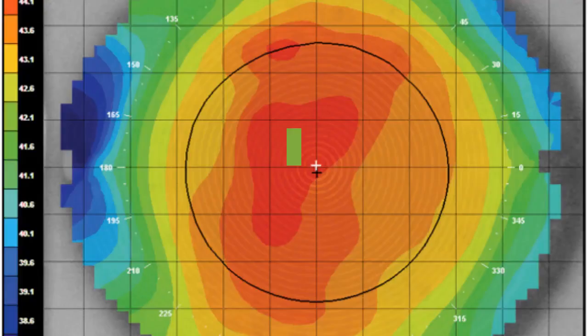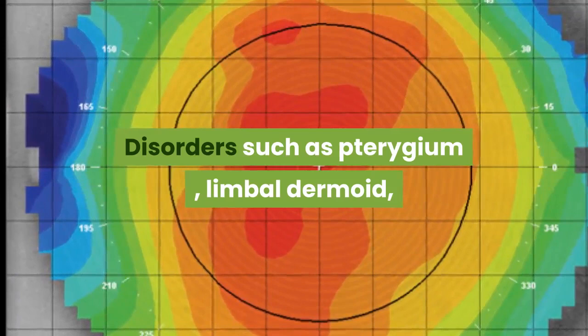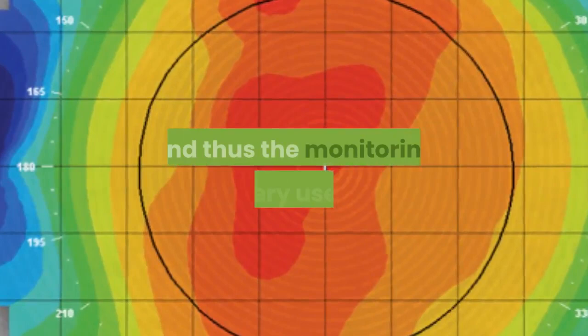Affective corneal and ocular surface disorders such as pterygium, limbal dermoid, and localized corneal scars can cause a change in the corneal topography, and thus monitoring is very useful.